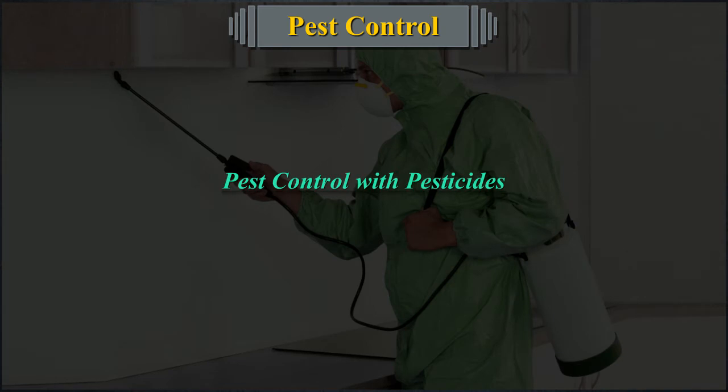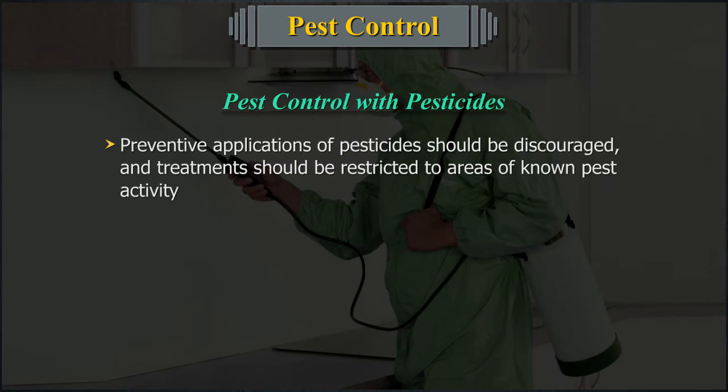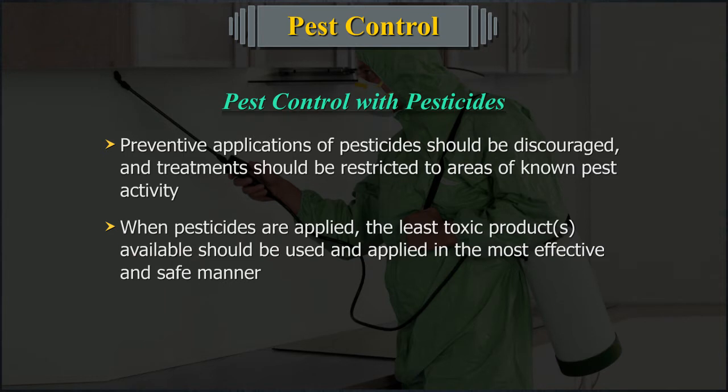Pest control with pesticides. Preventive applications of pesticides should be discouraged and treatments should be restricted to areas of known pest activity. When pesticides are applied, the least toxic products available should be used and applied in the most effective and safe manner.